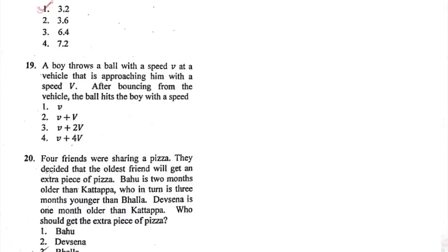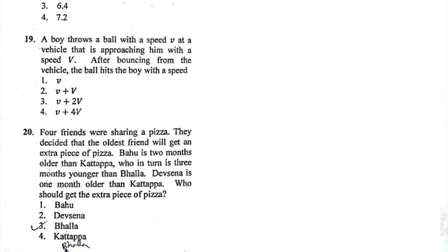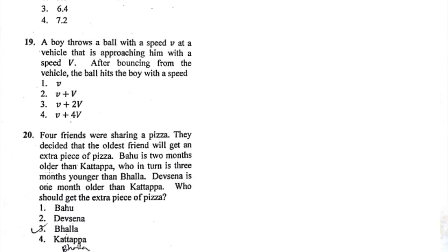This is one question I thought should be solved differently. For now I'll say, since the boy is throwing a ball with speed V and a vehicle is approaching with velocity capital V, after bouncing from the vehicle the ball will hit the boy with speed V plus capital V. That's what I think for now. You can give your opinion. I'm 70% sure this should be correct answer. Let's see what will be the correct answer for this question.